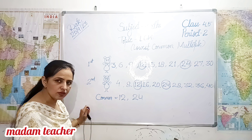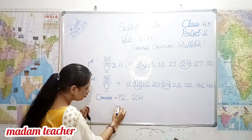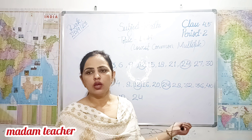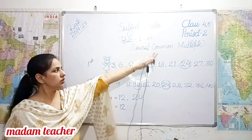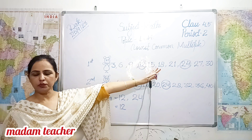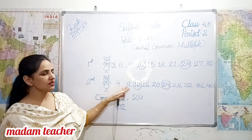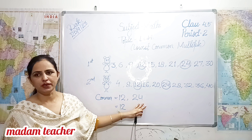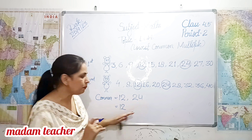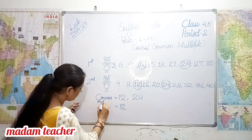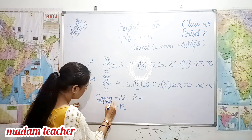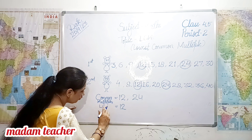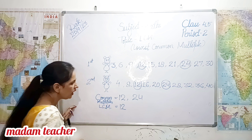So they met at twelve and twenty-four. These are common points. Now lowest — sabse choti digit kaunsi hai? It is twelve. Twelve is the lowest digit. These are multiples of three, and these are multiples of four. Twelve and twenty-four are common multiples. And twelve is the lowest common multiple.